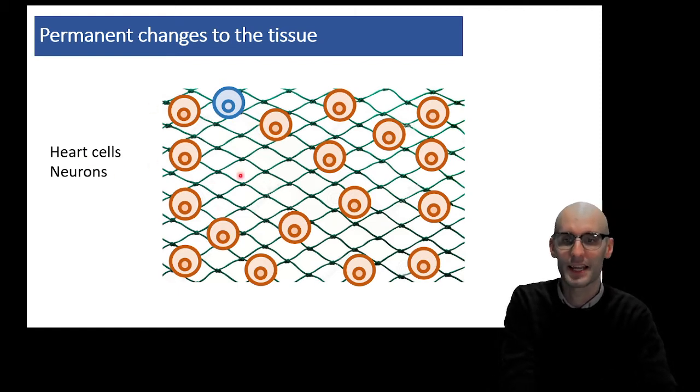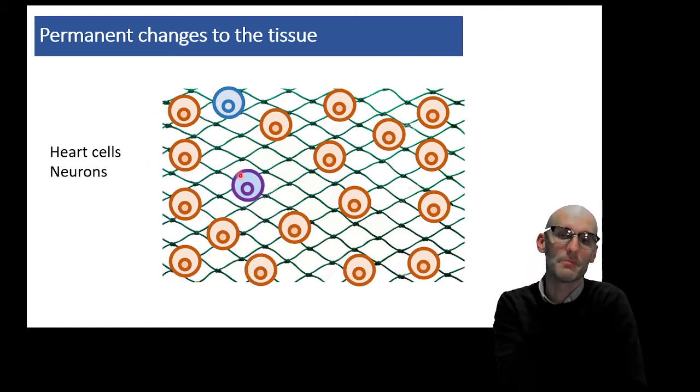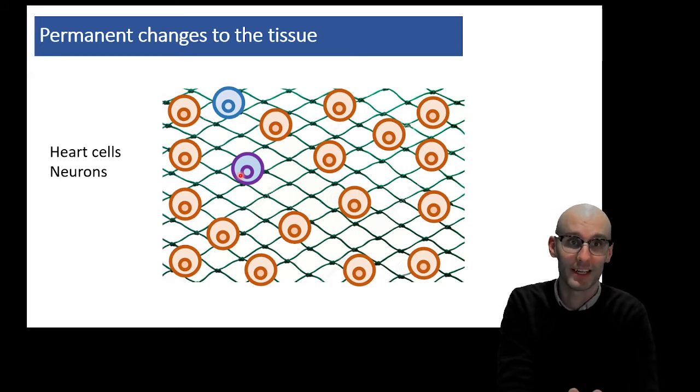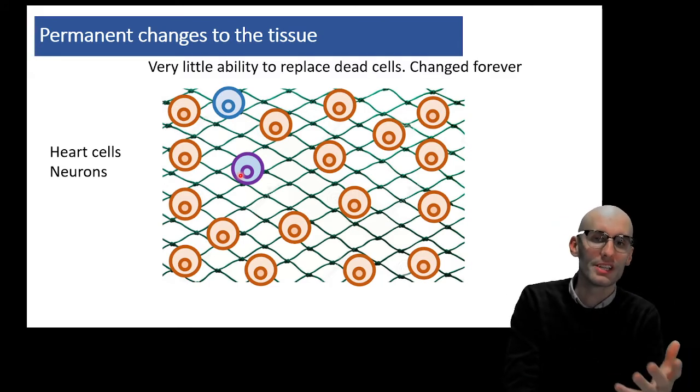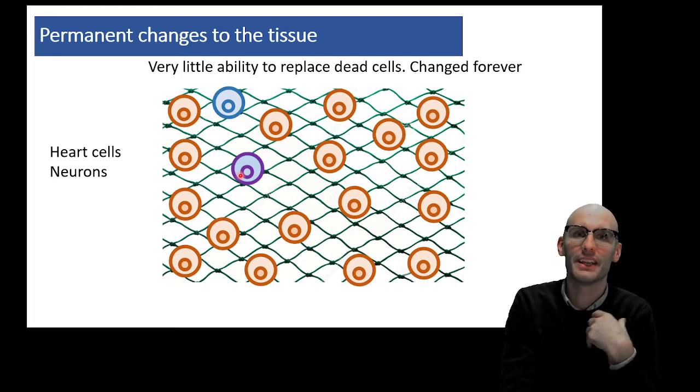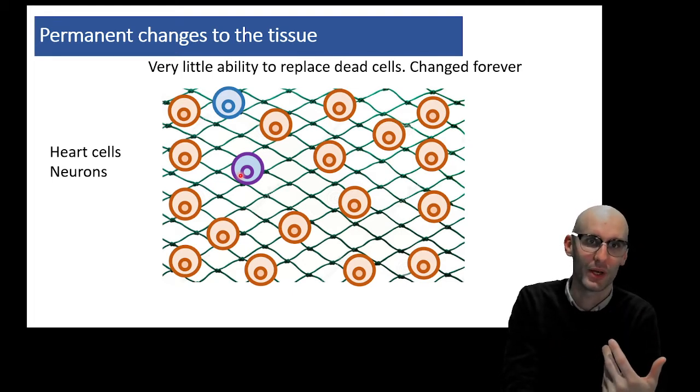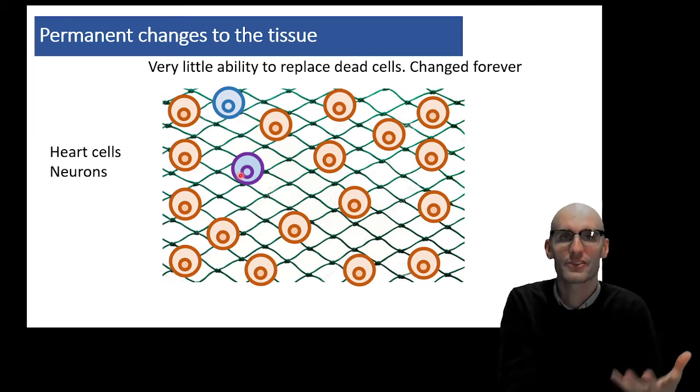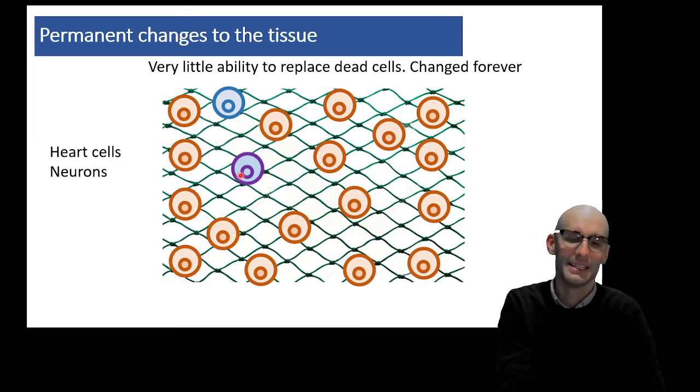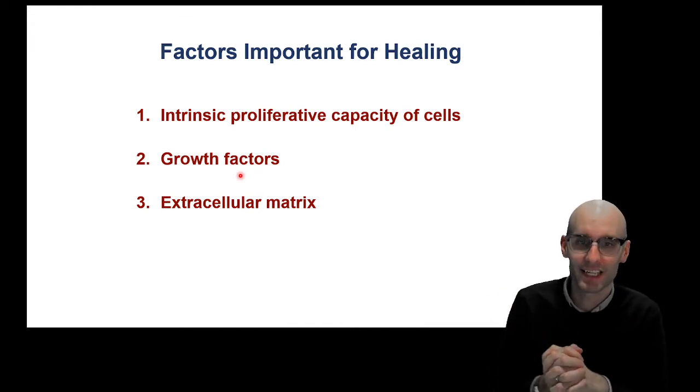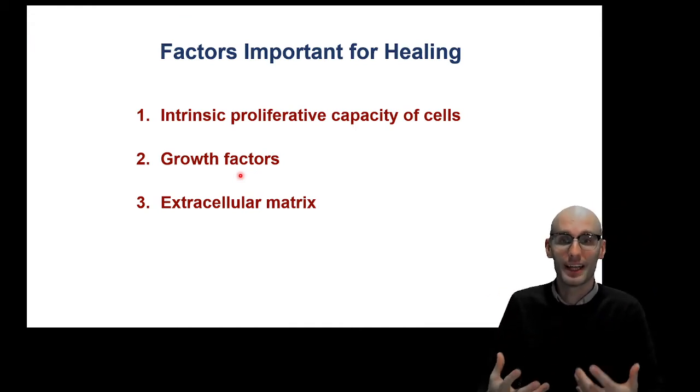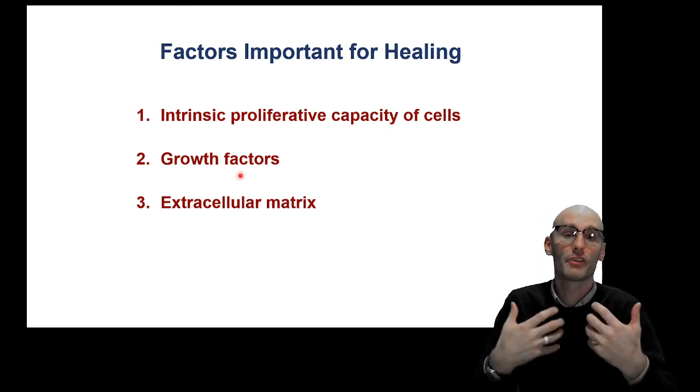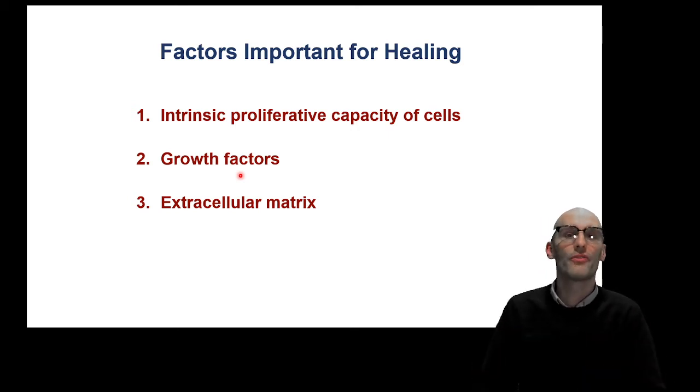So what we would see in a heart cell and a neuron, we would still see the migration of cells from elsewhere into it, but they wouldn't change back into the neurons or the heart muscle cells. They would stay this other type of cell. In the brain, it's often what's called an astrocyte or a glia. So important factors that contribute to the healing process and how good it is are the intrinsic proliferative capacity of the cells of the tissue, the growth factors, and the extracellular matrix - the rigidity of it, but also is it intact?